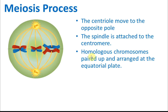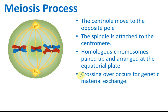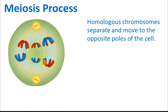The homologous chromosomes — chromosomes with the same contents and numbers — pair up and arrange at the equatorial plate in the middle of the cell. Crossing over then occurs, where chromosomes exchange genetic material between them.